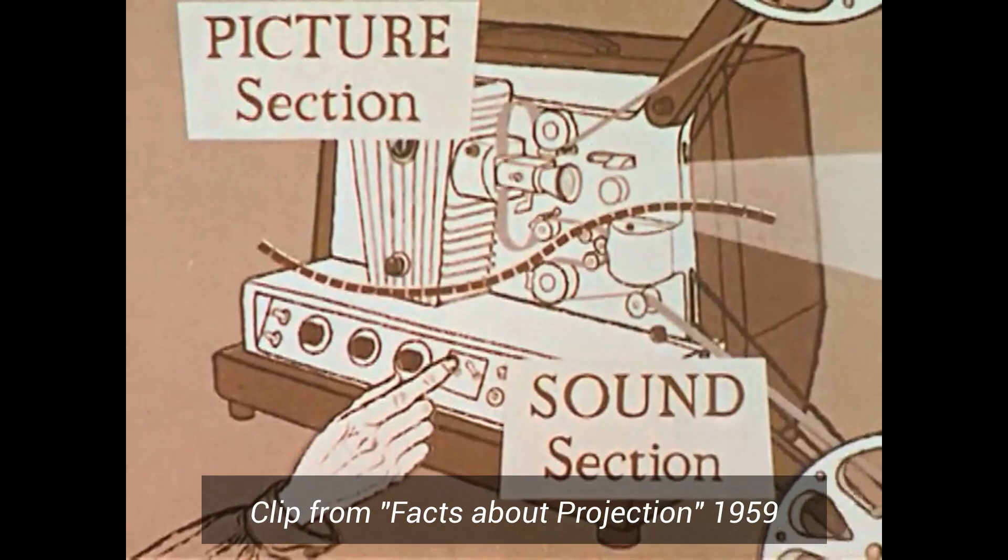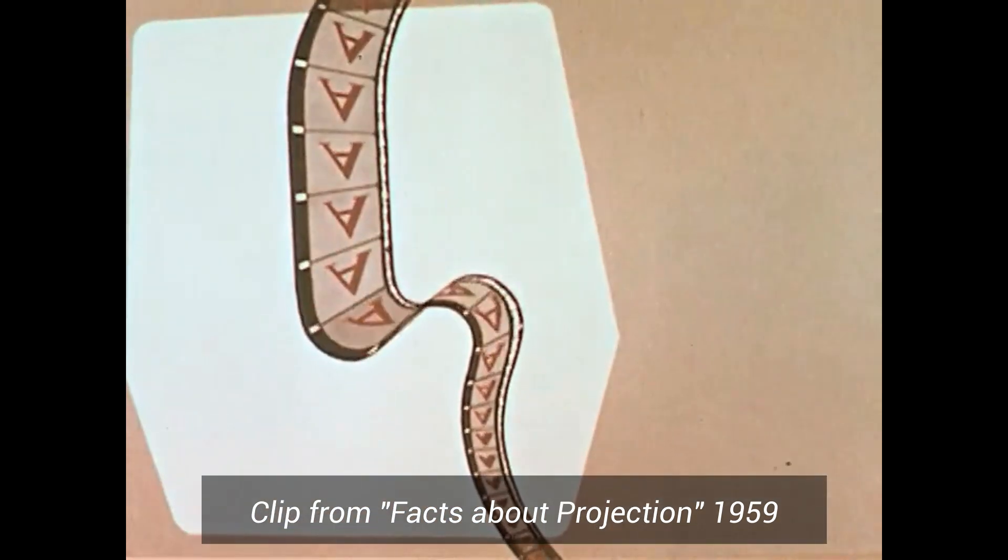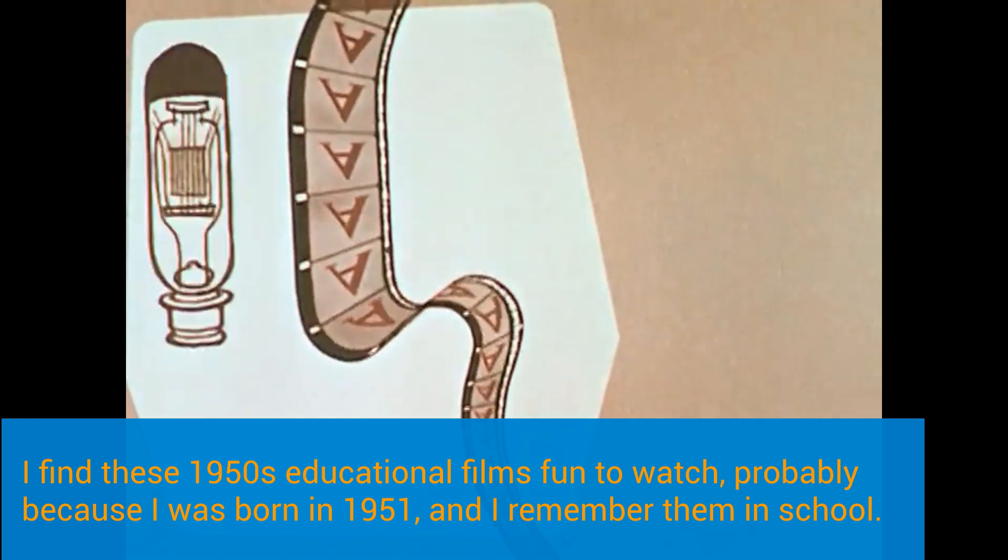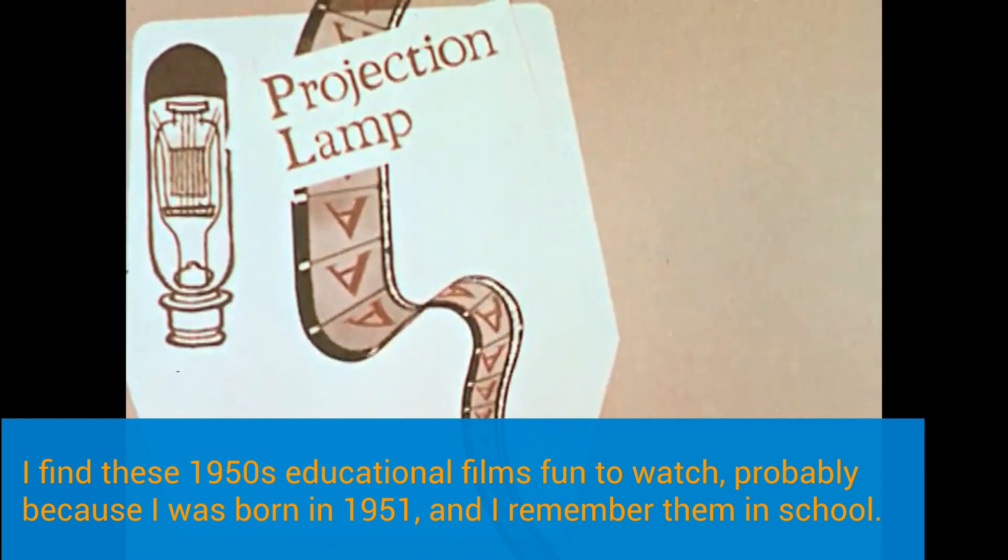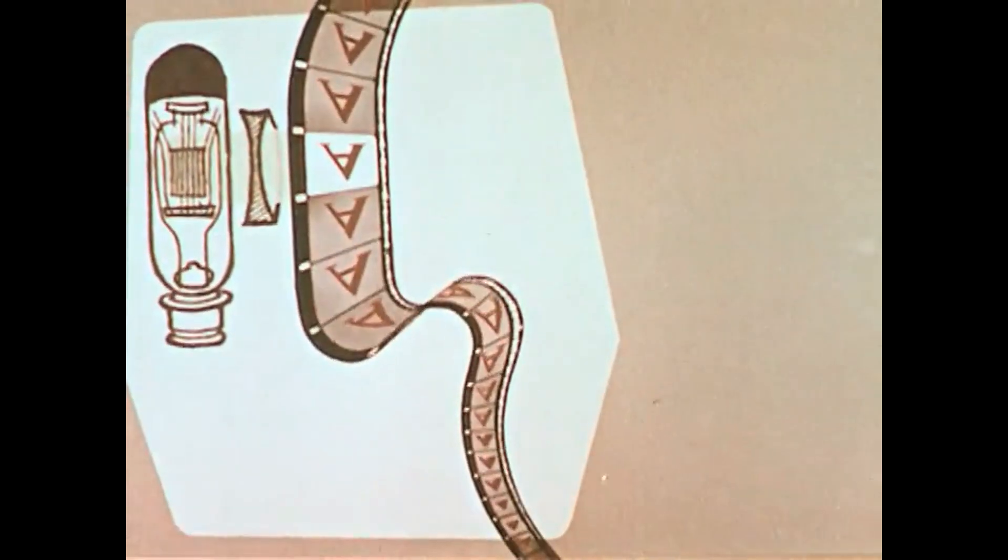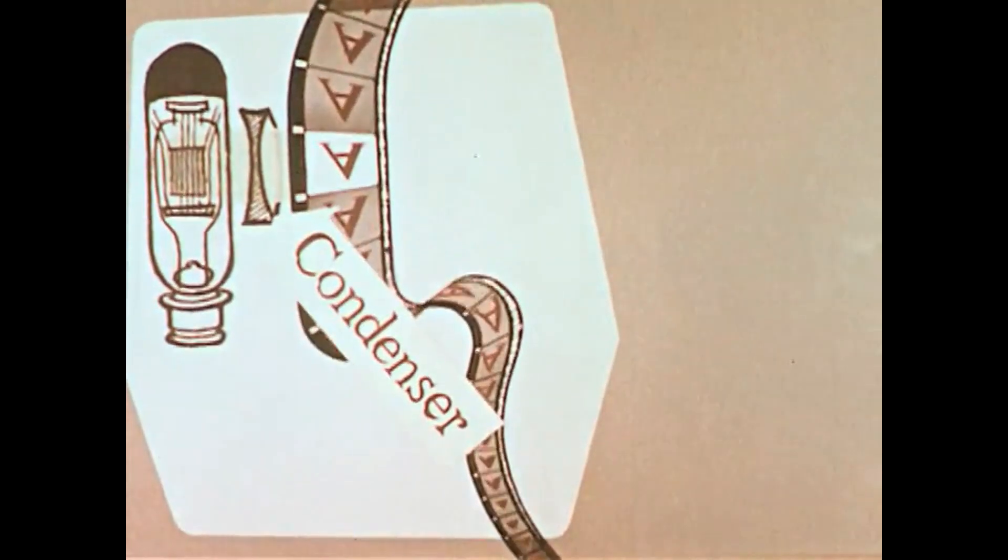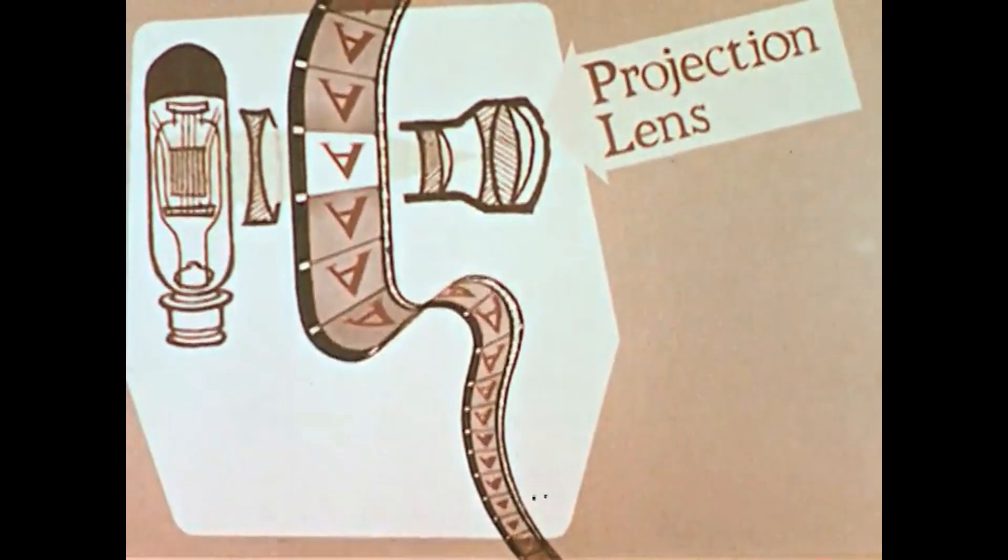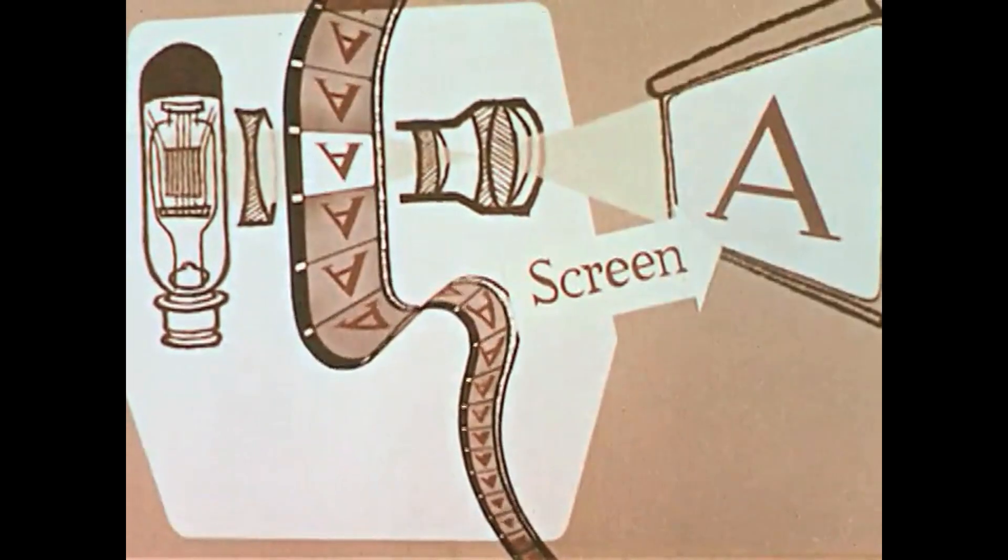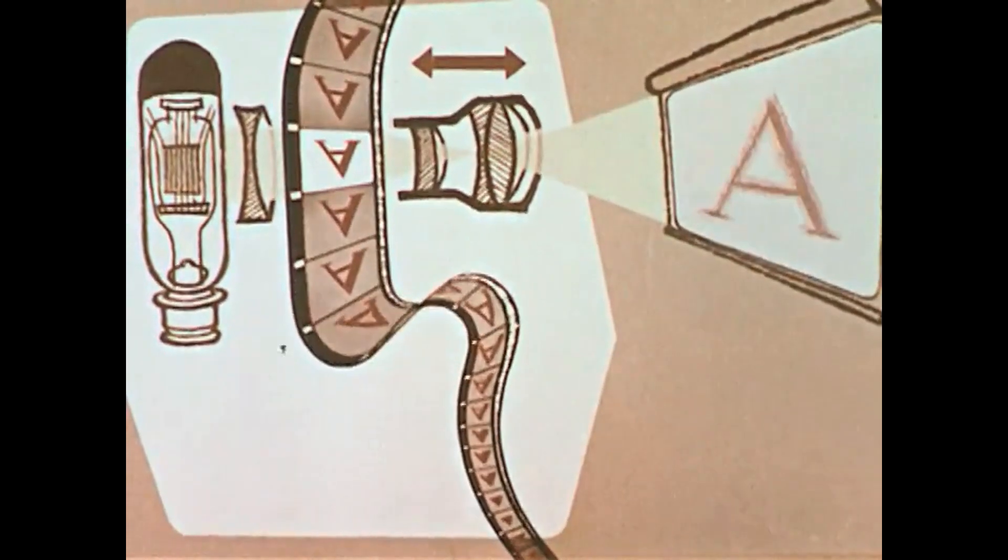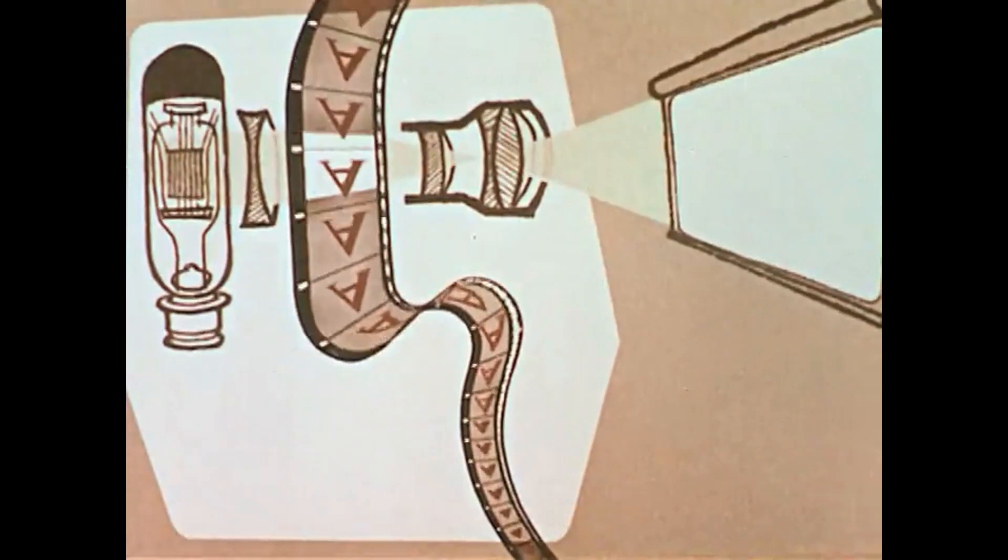As the film moves through the projector, it first enters the picture section. This section consists of the projection lamp, which is a very bright light source. This light is concentrated on a single frame of the film by a condenser lens. The brilliantly illuminated frame is projected by the projection lens onto the screen. Next, the film enters the sound section.